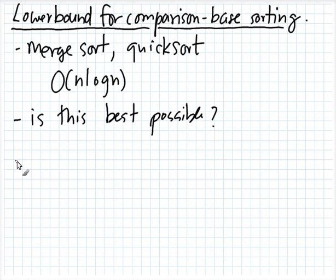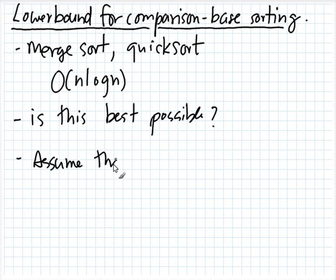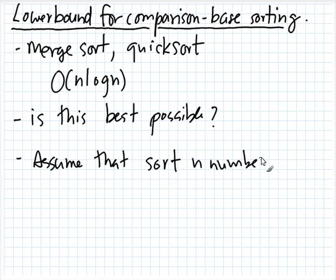We make a few assumptions so that it's easier to proceed, and it won't really hurt us. We assume that when we sort N numbers, all numbers are distinct.